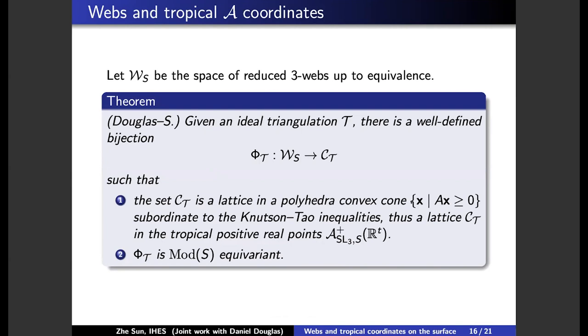So, the polyhedral convex cone is studied very frequently in computer science in linear programming. So, here, the example is just a lattice in the polyhedral convex cone, subordinate to a family of inequalities, so-called coalescent tau inequalities.